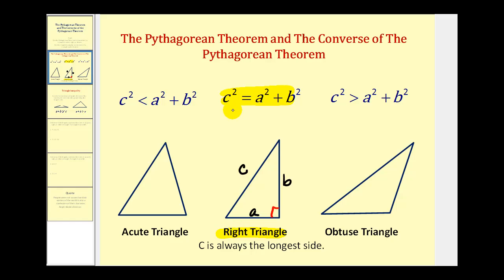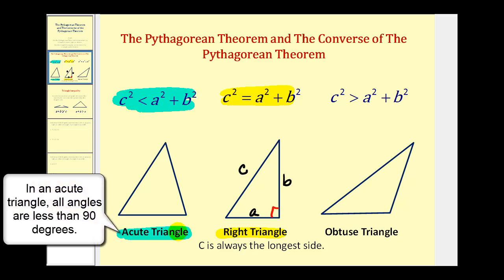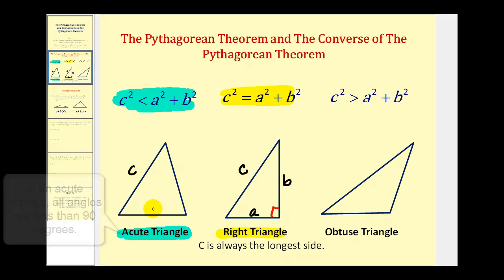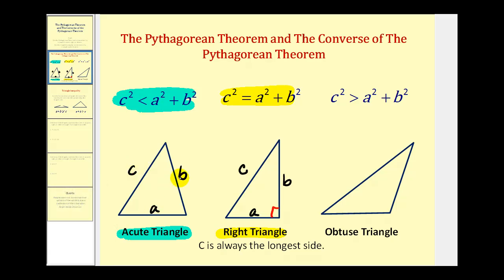We can also use the relationship between c squared and the sum of a squared and b squared to determine if we have an acute triangle or an obtuse triangle. If c squared is less than a squared plus b squared, then we would have an acute triangle. To apply this, we do have to remember that c will always be the longest side — so in this case, this would be c, and these two sides would be a and b.